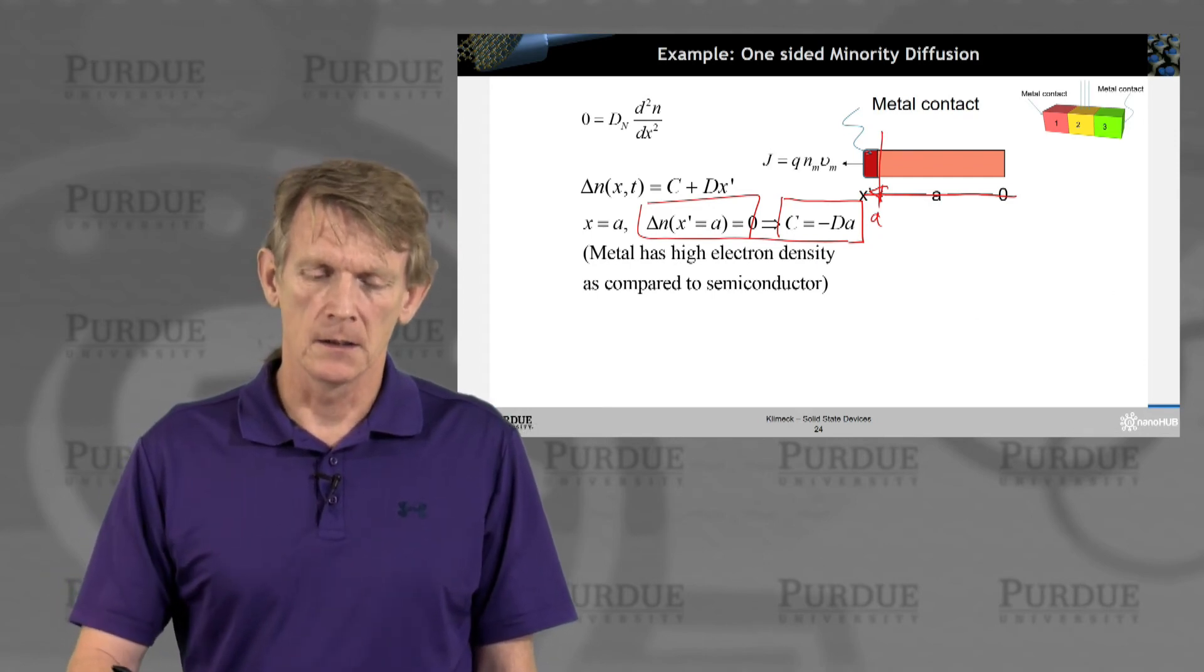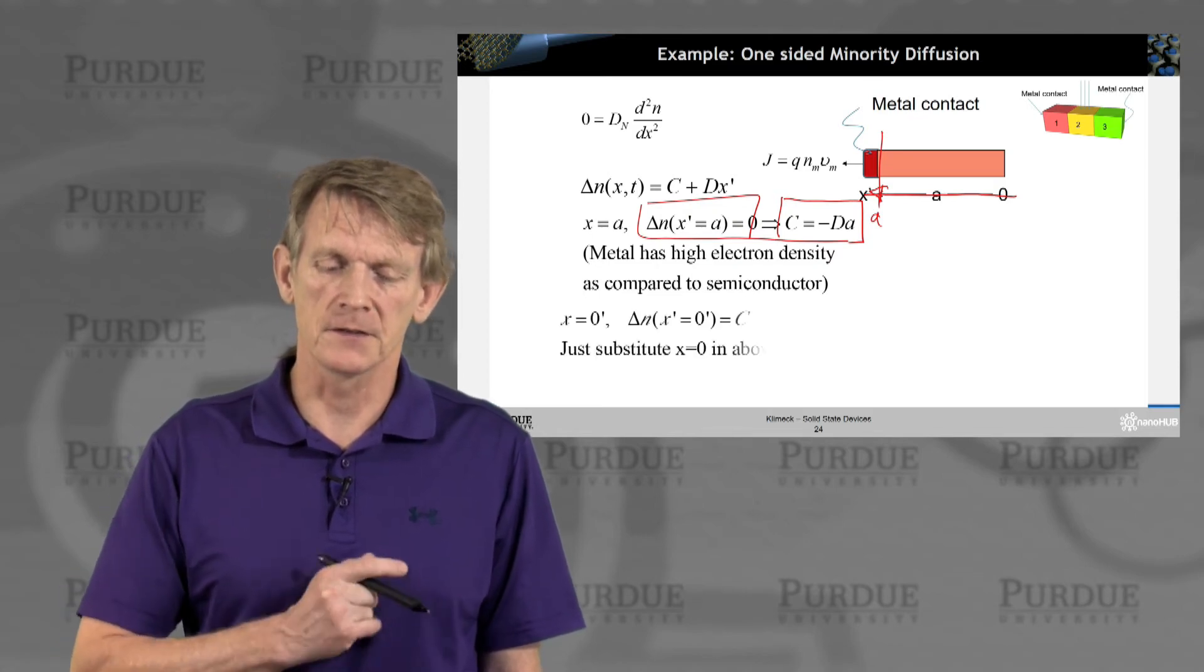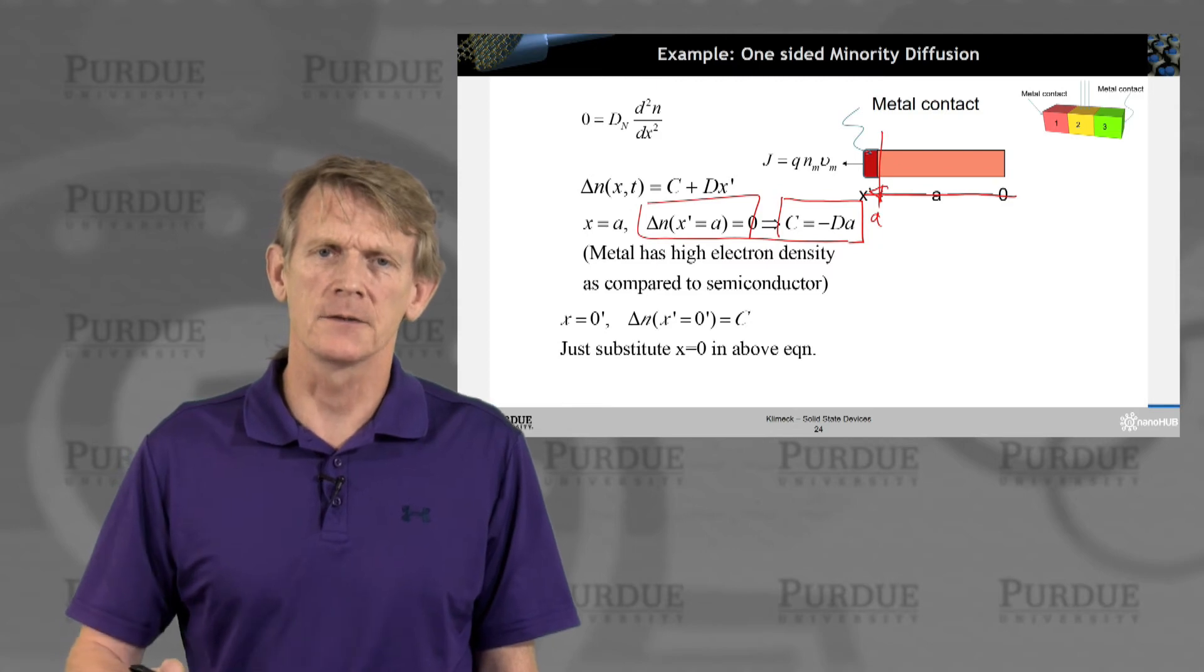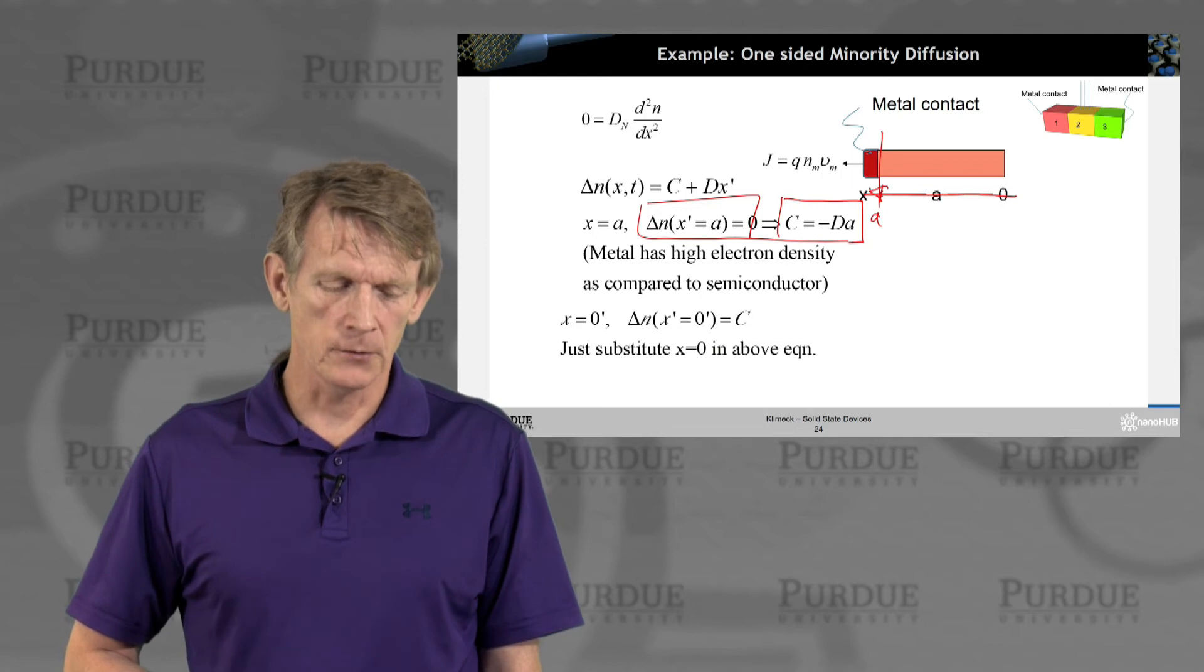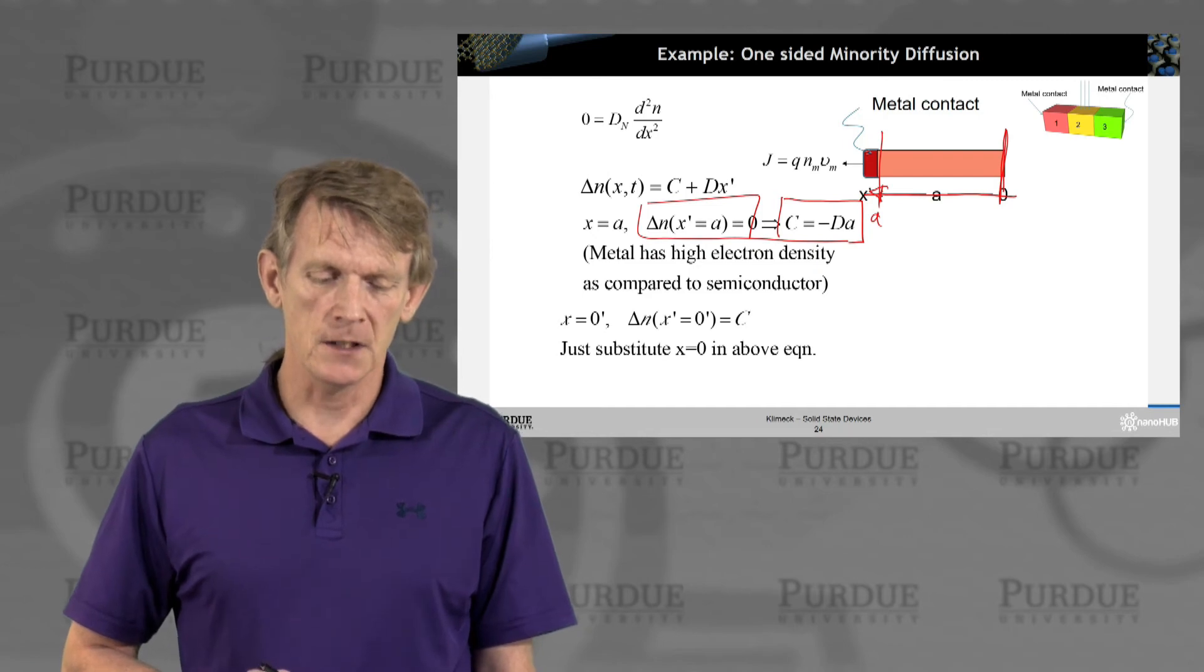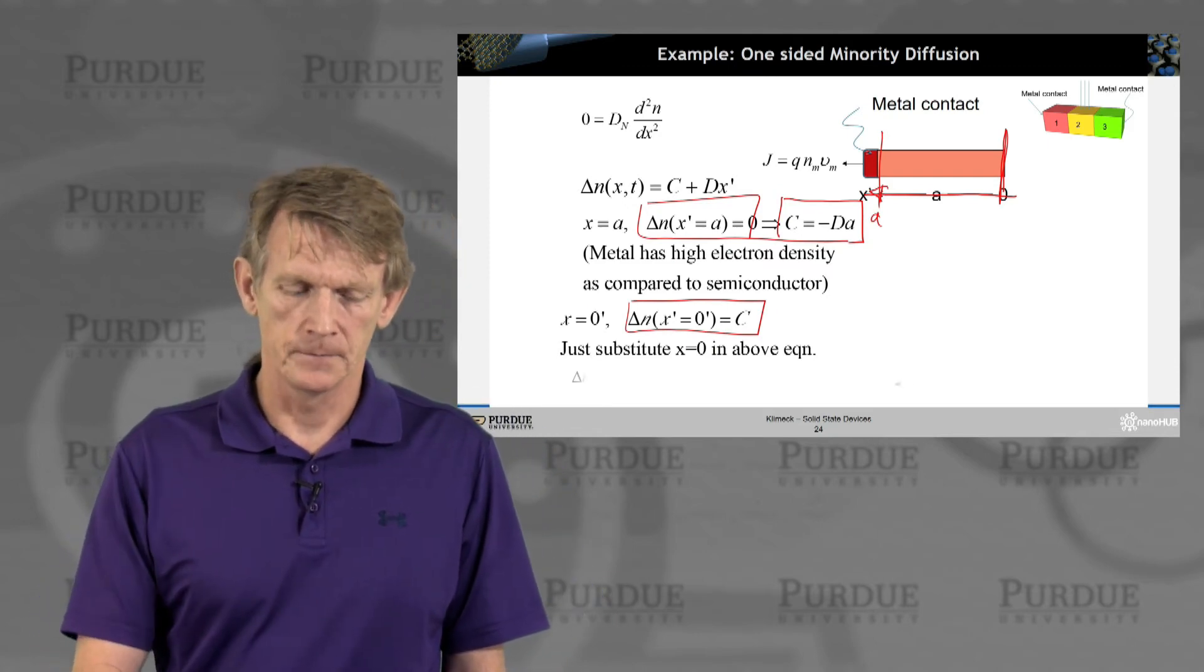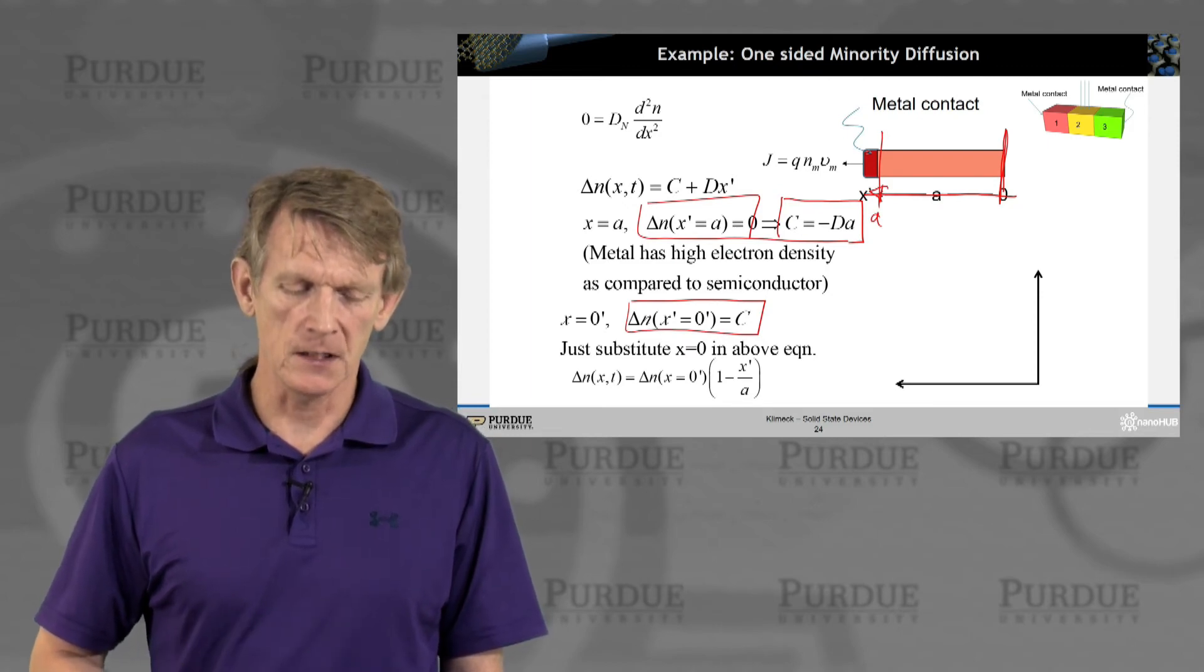Okay. So we have a current that is effectively flowing out at this interface with a velocity of the metal and an electron density of the metal. So we have the boundary condition that we now have set here. And we set that value to c. And we'll have to determine c through boundary conditions in the middle region.